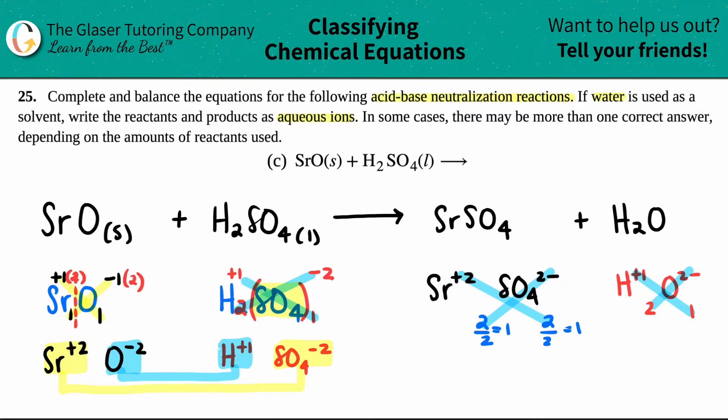Now we just have to make the states. Let's work with water first. Water, it's in liquid form. So L. Usually when we see water, it's in a liquid form. Now let's look at our strontium sulfate. How am I going to know if this is a solid, liquid, gas, or aqueous? You look at your solubility chart.